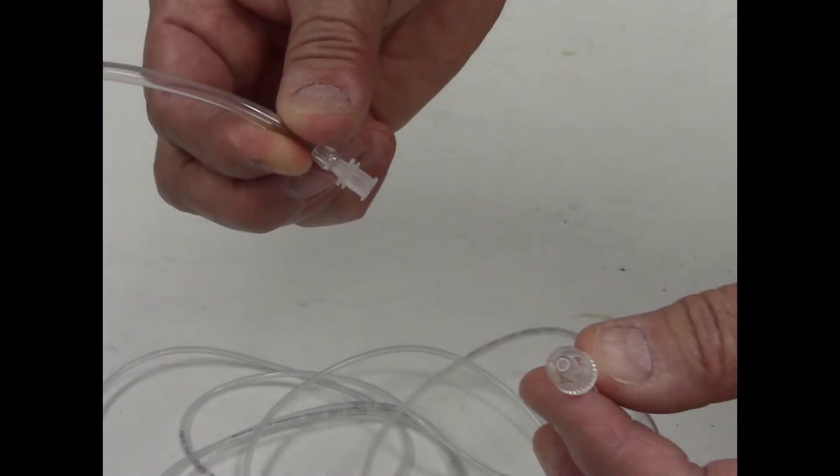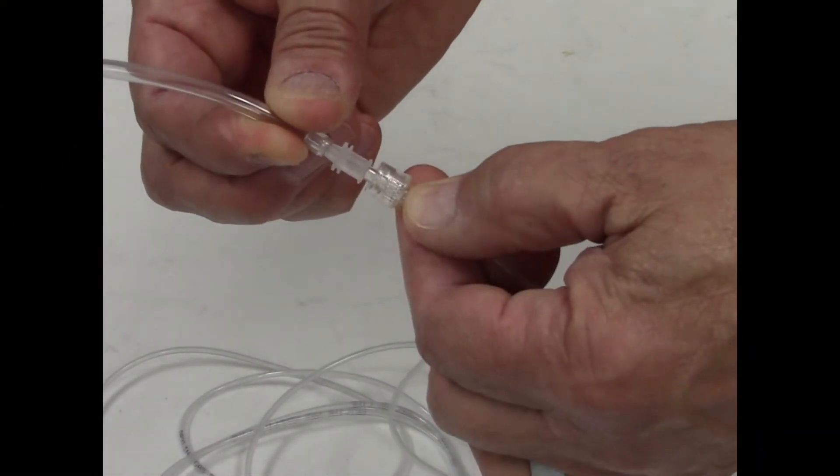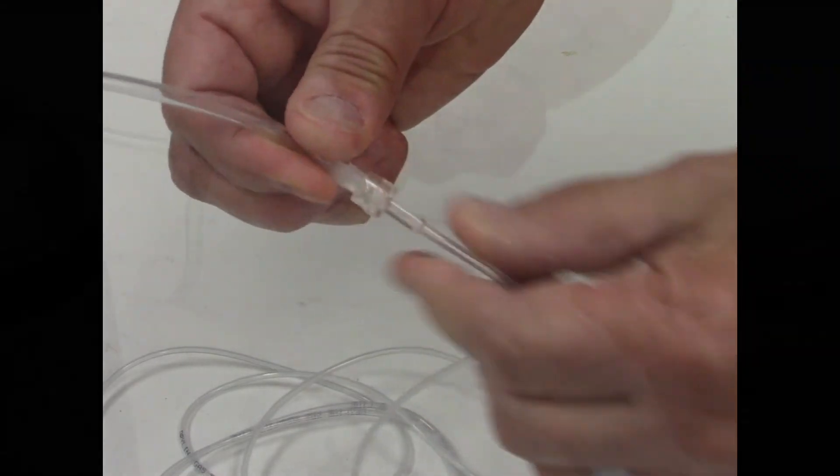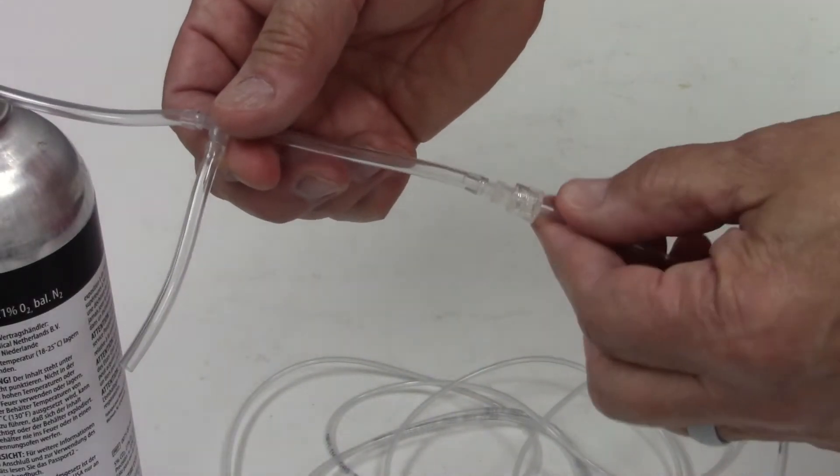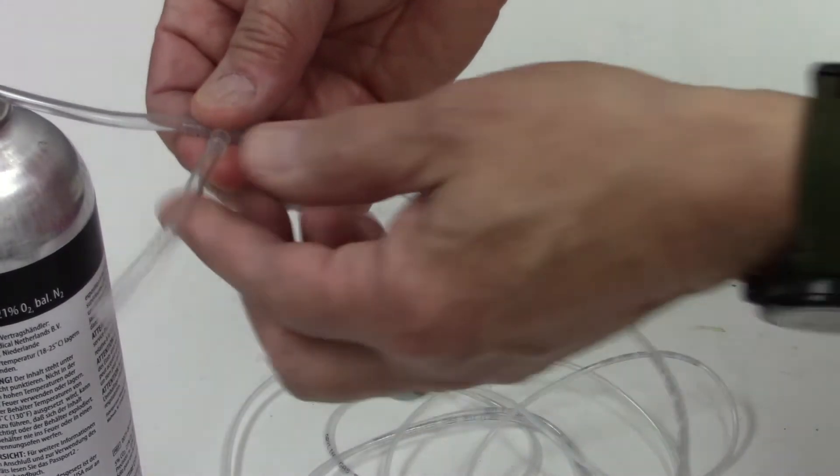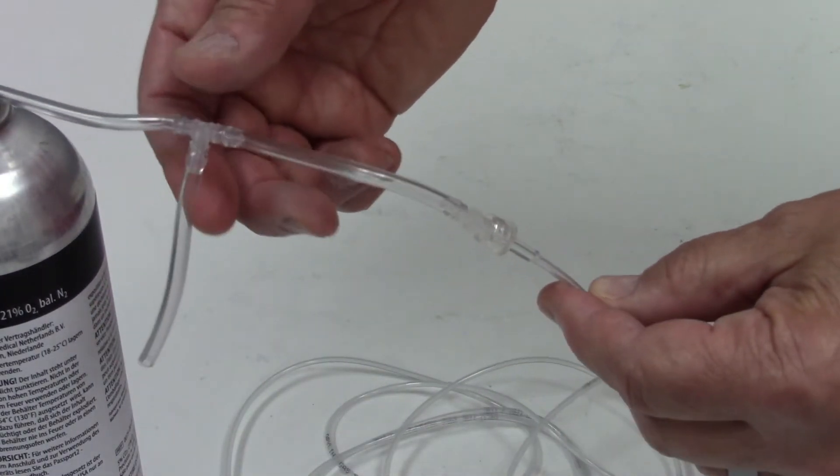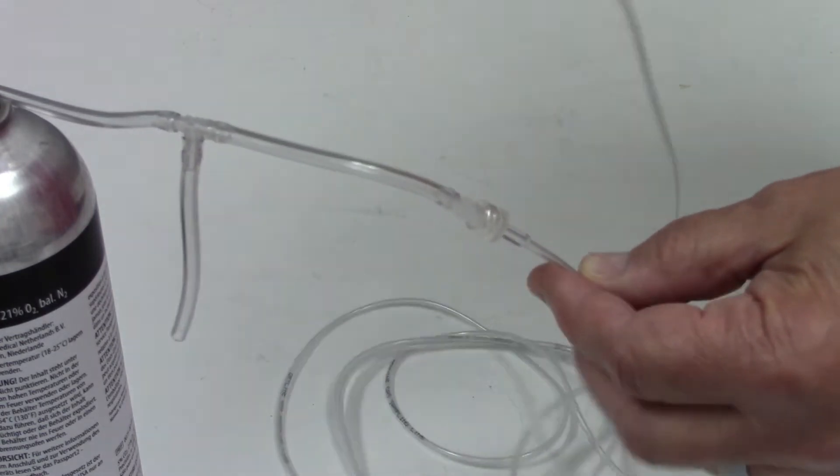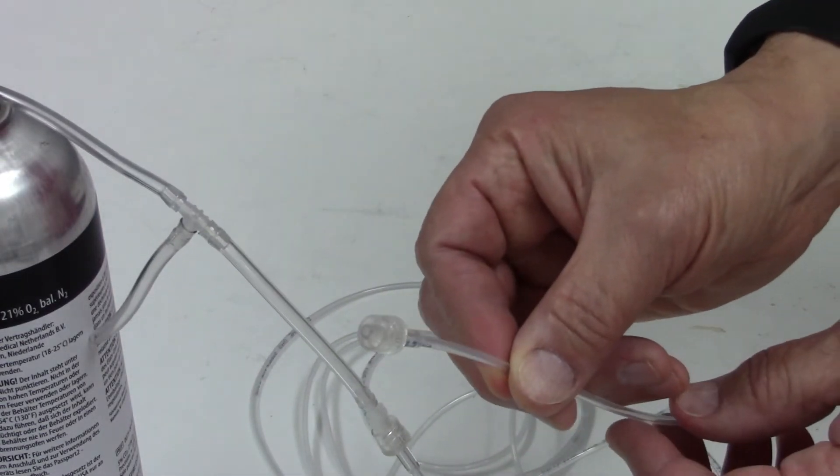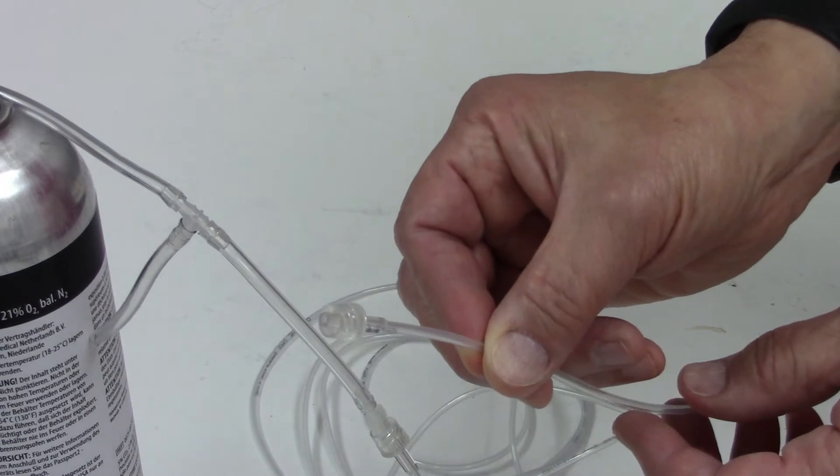When you calibrate your CO2 module, attach the sample line to the T-fitting supplied with the gas. Make sure your T is open to atmosphere so you don't pressurize the CO2 module. Connect the other end of your sample line to the CO2 module to be calibrated.